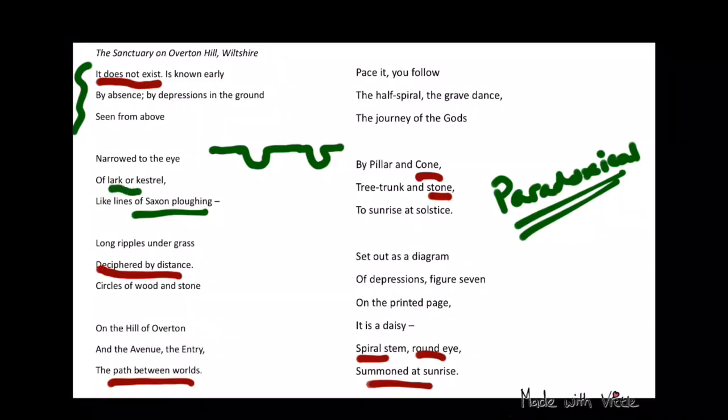And so she's saying that the lark or the kestrel, the birds that fly over the top, they're the ones that can see the true configuration of what's there, not the humans standing on the ground. And most importantly we see this concept here, deciphered by distance.